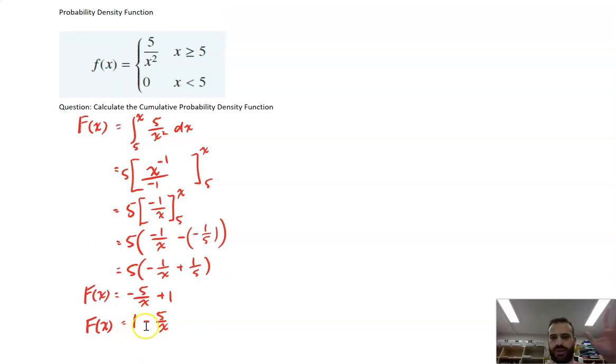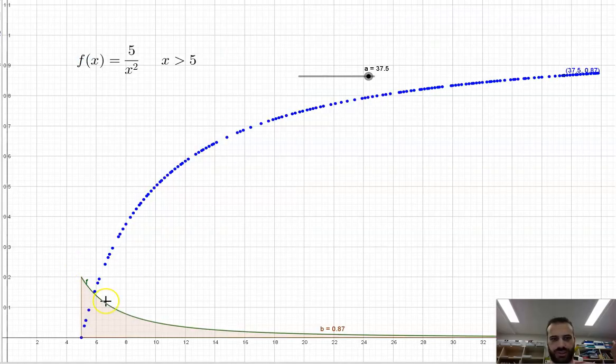So what is that? That is just pure gold, because now we can sub in any value of x and find out the probability of somebody being between that x and 5, or some score being between that x and 5. Now I'm going to use my new cumulative distribution function, which remember looks like this blue line here. And I'm going to use that to calculate three different probabilities.